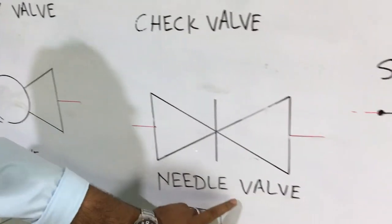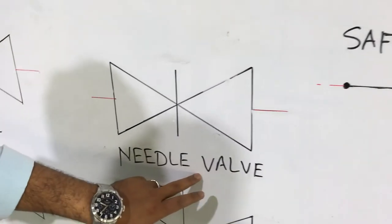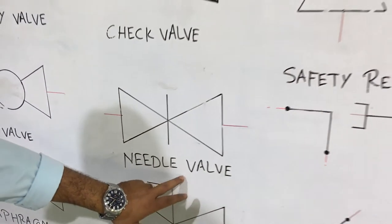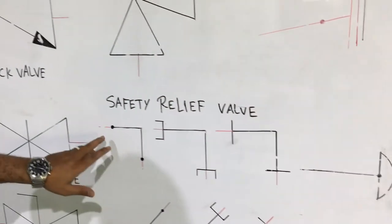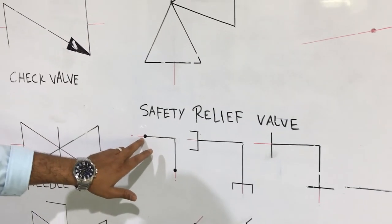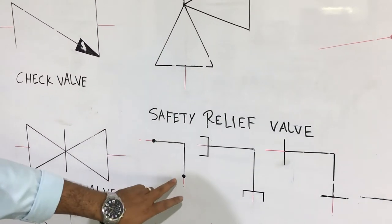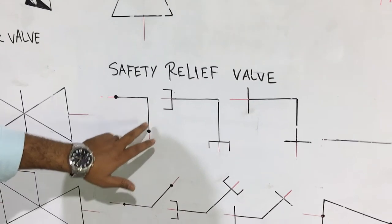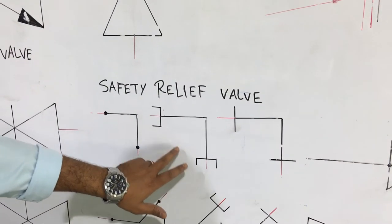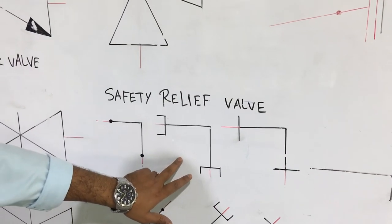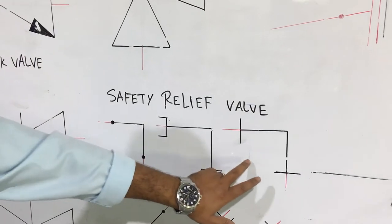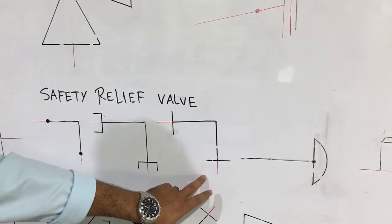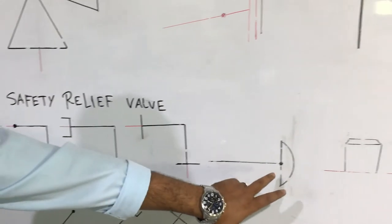This one we have needle valve. This one we have the symbol point which is butt weld. This is butt weld 90-degree elbow, this is socket weld 90-degree elbow, this is threaded 90-degree elbow, and this is butt weld end cap.